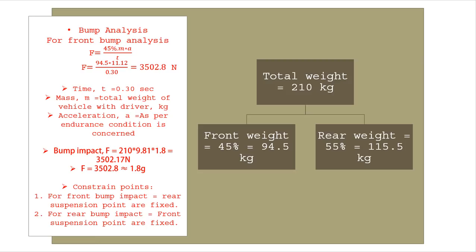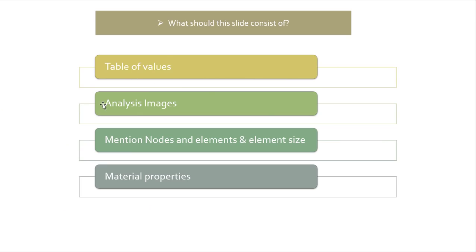What all should be there in this CAE slide: there should be a table of values of deformation during various analyses, your factor of safety, and maximum stress induced. There should be analysis photos of bump, torsional, front impact, rear impact, side impact, and rollover.